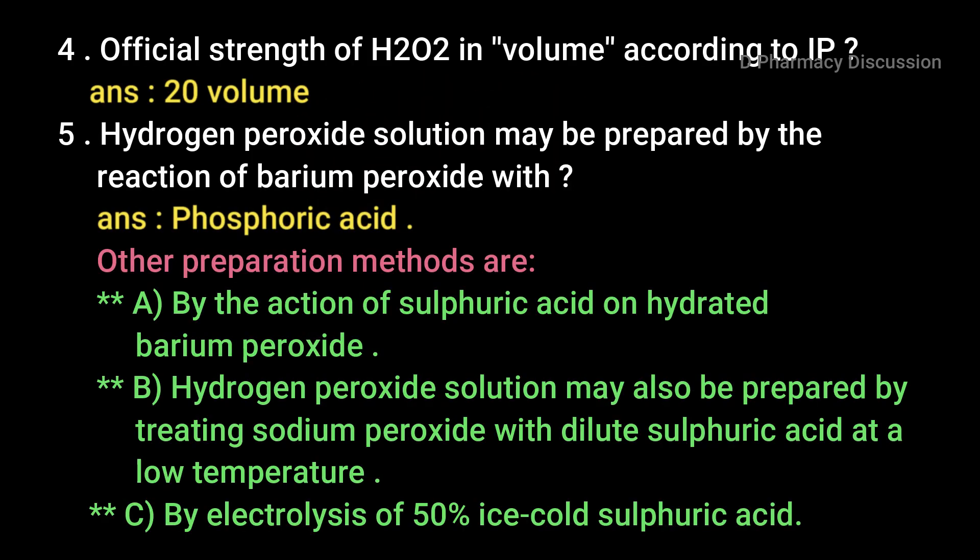Next question: official strength of H2O2 according to IP — answer 20 volume. Fifth question: hydrogen peroxide solution may be prepared by the reaction of barium peroxide with phosphoric acid. Other preparation methods include: by the action of sulfuric acid on hydrated barium peroxide; by treating sodium peroxide with dilute sulfuric acid at low temperature; and by electrolysis of 50% ice-cold sulfuric acid.